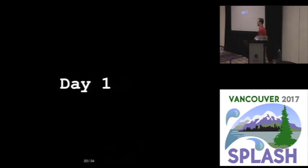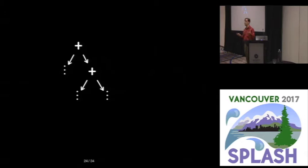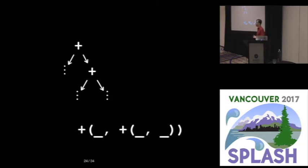So now, if we go back to our examples, let's see what happens. So for associativity, we want to look for a plus that's in the right-hand side of another plus. The underscores here are wildcards that say we don't care what's underneath here.